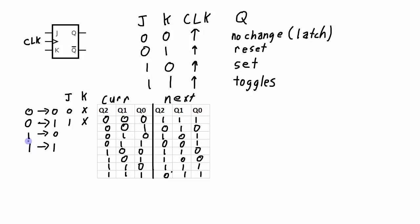Next, we could transition from a 1 to a 0. For that to occur, we could either force a reset where J is 0 and K is 1, or cause a toggle where J is 1 and K is 1. So in this case, it doesn't matter what J is as long as K is a 1. And finally, to go from a 1 to a 1, we could either have no change (J0, K0) or cause a set (J1, K0). So again, it doesn't matter what J is as long as K is a 0.